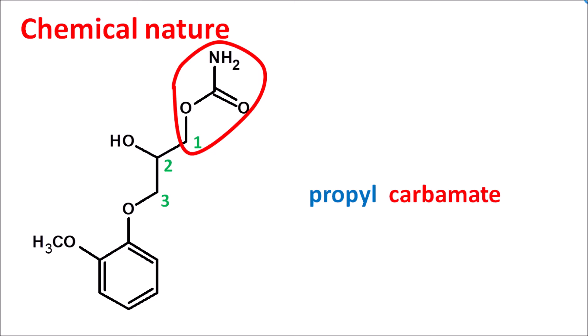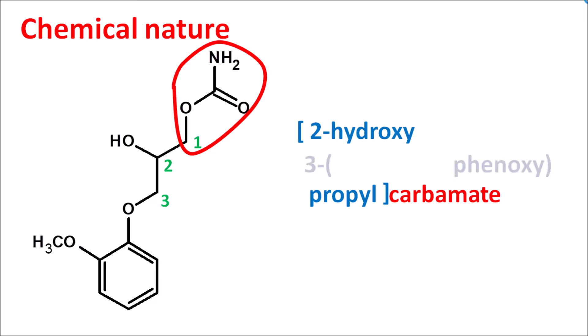To this propyl chain, at the second position a hydroxyl group is present — so: 2-hydroxy. And then it is attached with a phenoxy chain at the third position — so we can write this as 3-phenoxy. But this phenoxy group has a methoxy group at the ortho position, which we can write as 2-methoxy. So simply, methocarbamol is a propyl carbamate derivative.